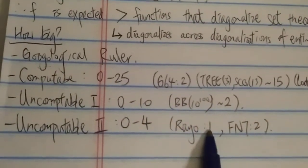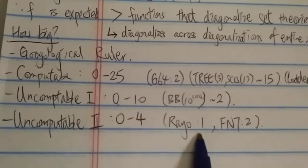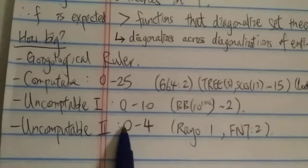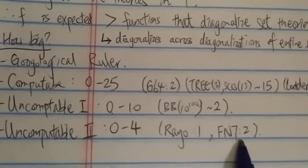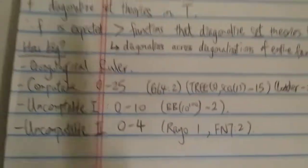And then for uncomputable two, rail's number is, I think, in level one. So they are zero, one, two, three, four. Rail is one. And then the fish number seven is level two. So how big is this number?